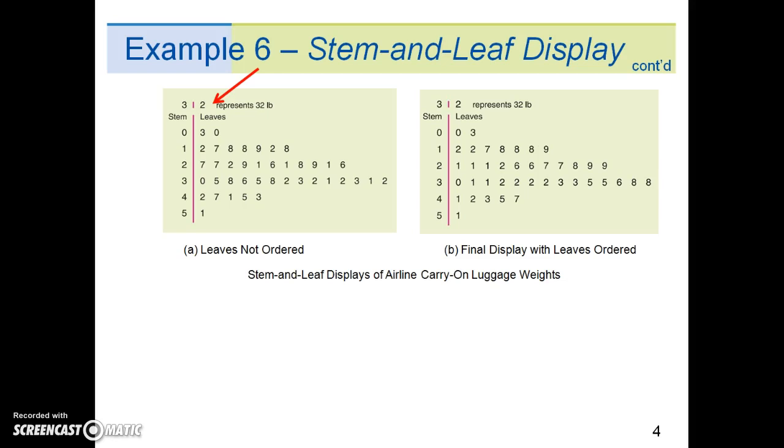We are free to choose the number of digits to be included in the stem. The weights in our example consist of two-digit numbers. For a two-digit number, the stem selection is obviously the left digit. For example, for the weight 32, the stem is 3, the left digit, and the leaf is 2.